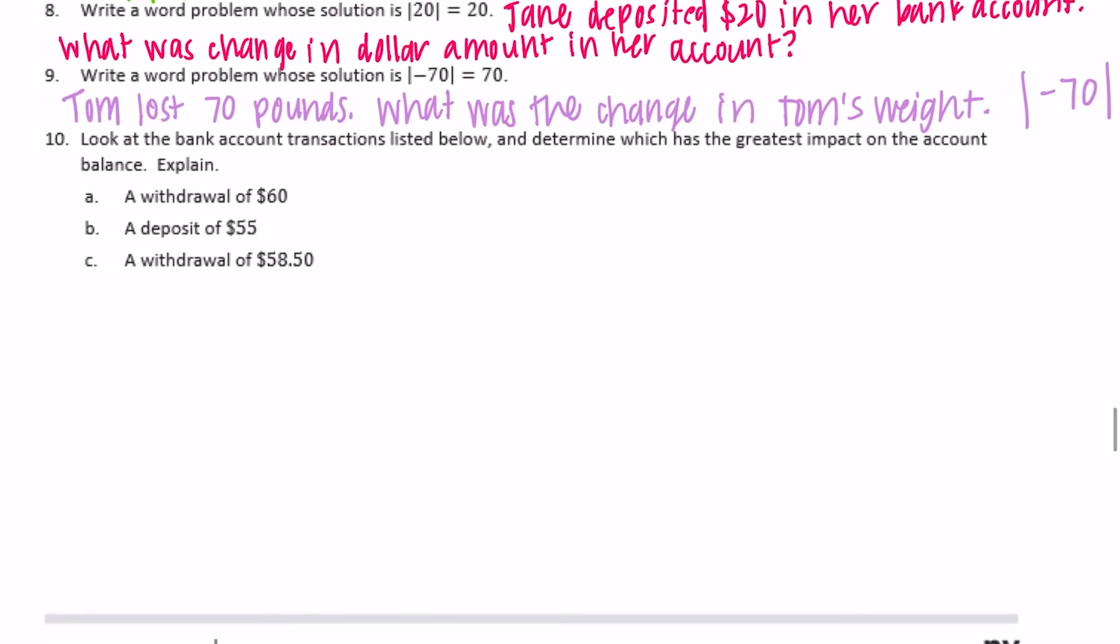Number 10: Look at the bank account transactions listed below and determine which has the greatest impact on the account balance. Explain. So a withdrawal of $60. Withdrawal means you're taking it out, so negative $60. Absolute value of that would be 60. Deposit of $55. So there you're depositing, putting money in, positive $55. The absolute value of that is 55. Withdrawal of $58.50, so negative $58.50. The absolute value of that is 58.50.